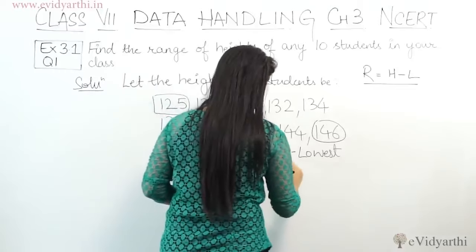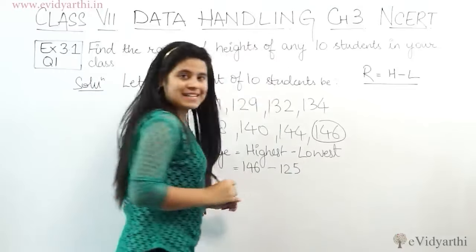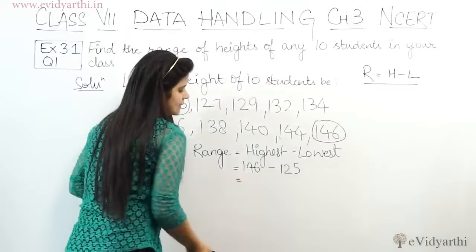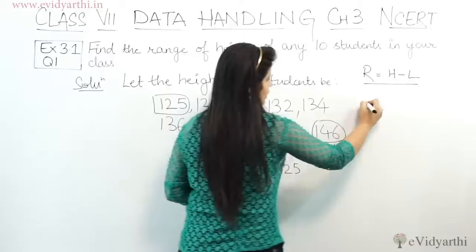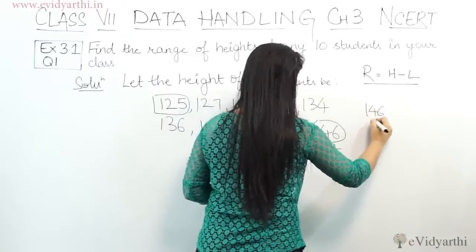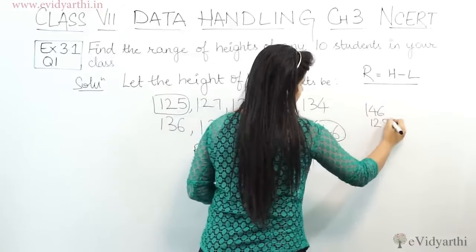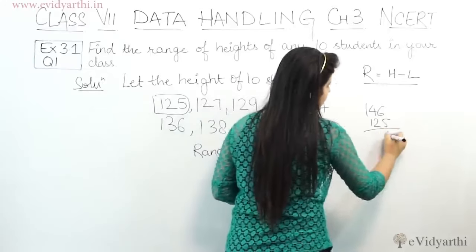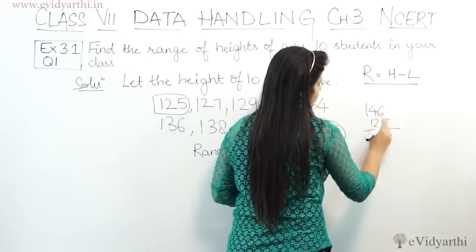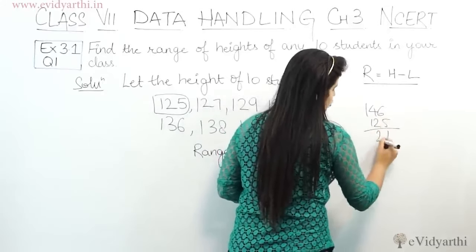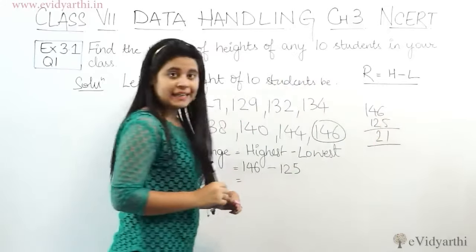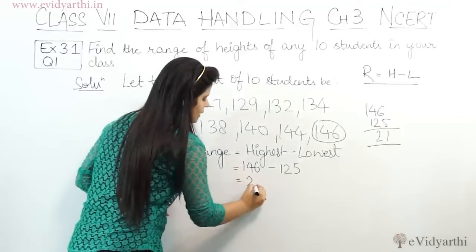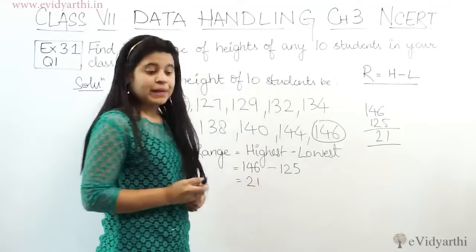The lowest value is 125. So we calculate 146 minus 125. 6 minus 5 is 1, 4 minus 2 is 2. So this gives us 21. The answer is 21.